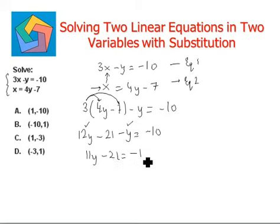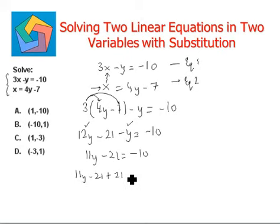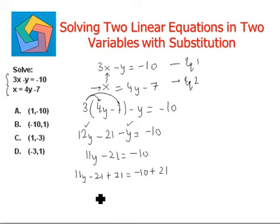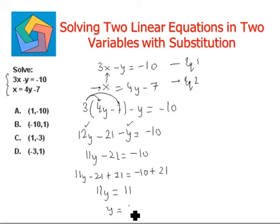So we add 21 to both sides to make the negative 21 equal to 0. Combining the like terms, 12y minus y is 11y. So 11y equals negative 10 plus 21, which is 11. Therefore y equals 1.